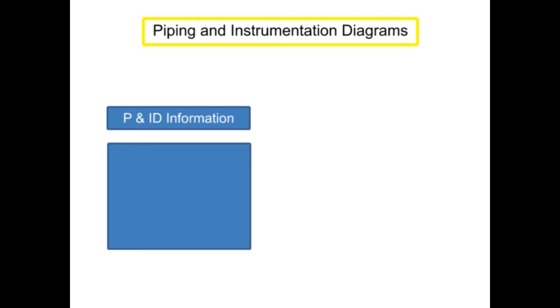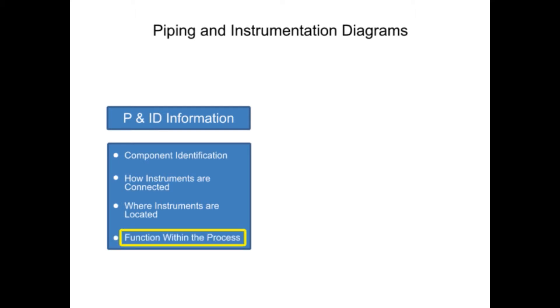Piping and instrumentation diagrams provide information that includes component identification, how instruments are connected, where instruments are located, and their function within a process.